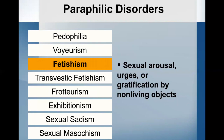For fetishism, we are looking for a period of at least six months where they've had recurrent and intense sexual arousal from either the use of non-living objects or a highly specific focus on a non-genital part of the body, as manifested by their fantasies, urges, and behaviors. This causes them clinically significant distress or impairment, and the fetish objects cannot be limited to articles of clothing used for cross-dressing or devices specifically designed for tactile genital stimulation. Some of the most common objects would be women's clothing such as underpants, bras, stockings, or shoes. They will often masturbate while holding, rubbing, or smelling these objects.